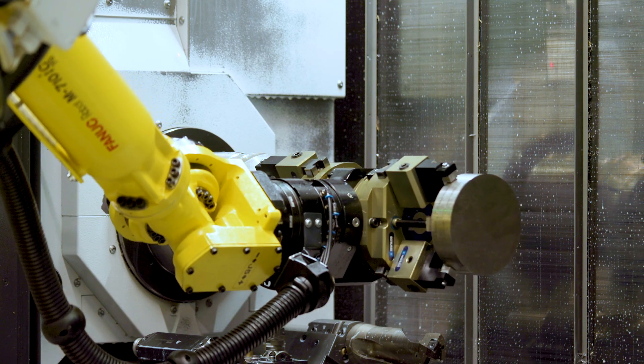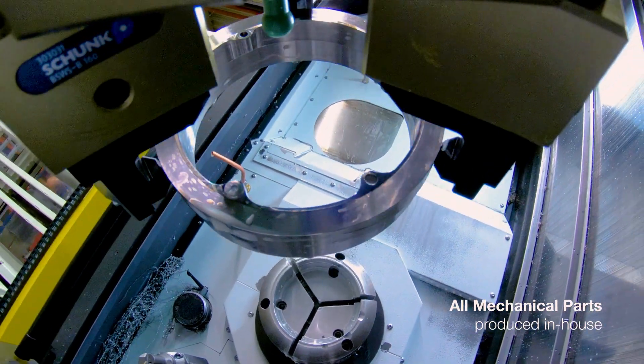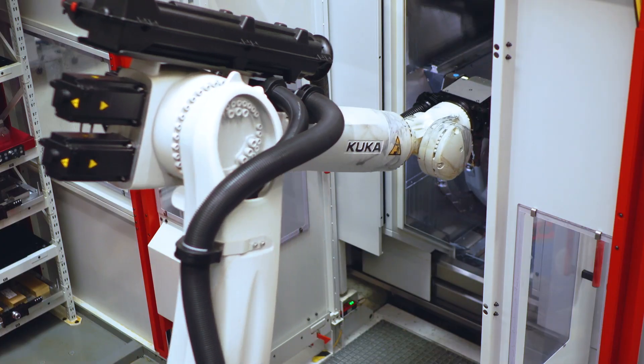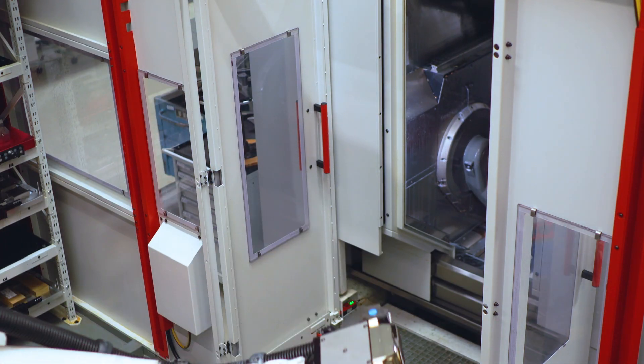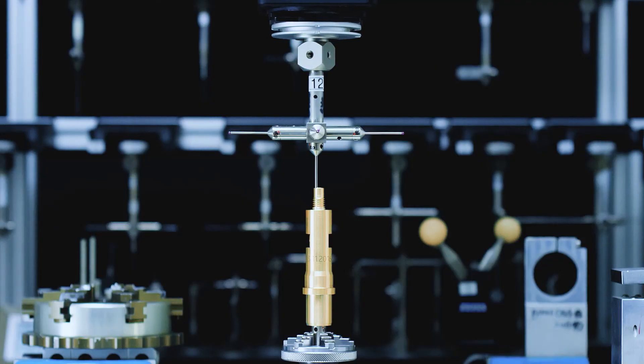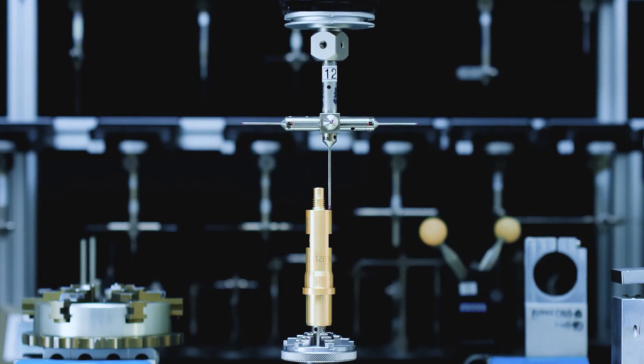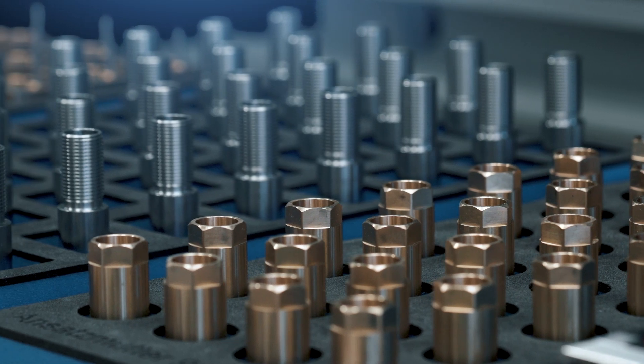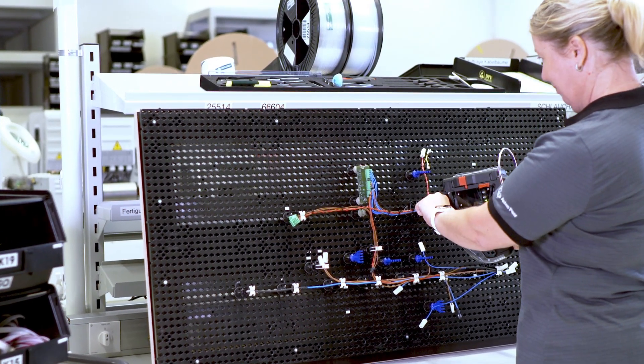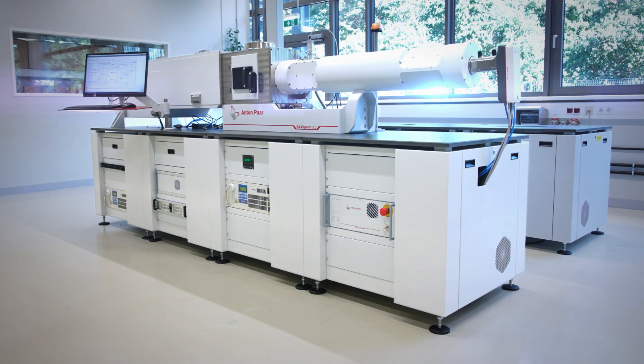And high-precision manufacturing is in our DNA. Every one of the mechanical parts that make up SAXSpoint 5.0 is made in our high-tech production facilities in Austria and at AXO Dresden in Germany. Every inch of the housing, every screw, every cable. Because we know 100% quality requires 100% control.